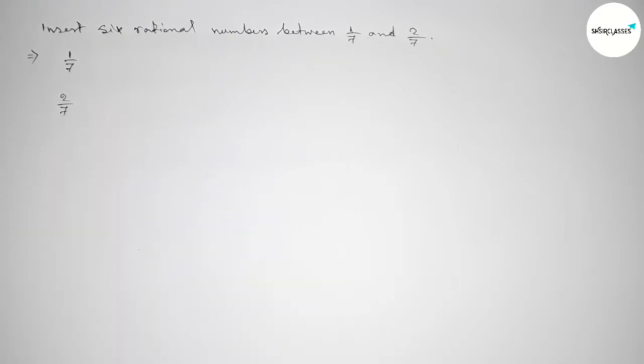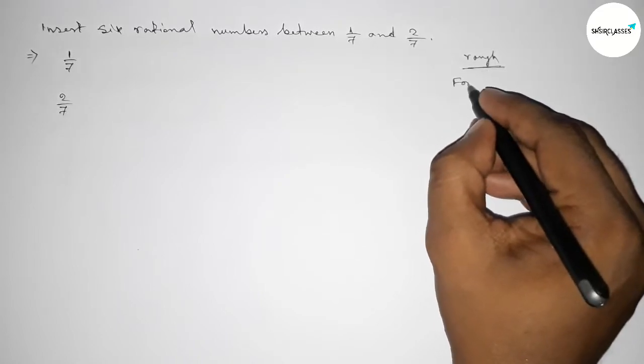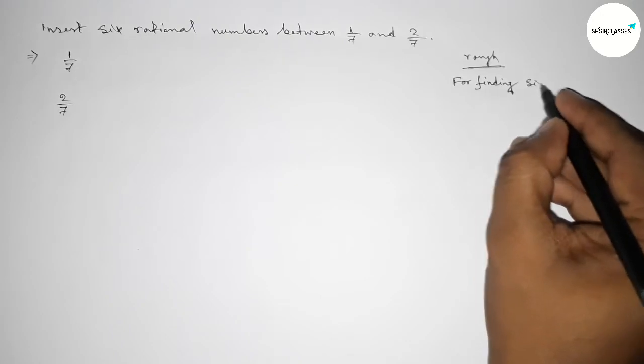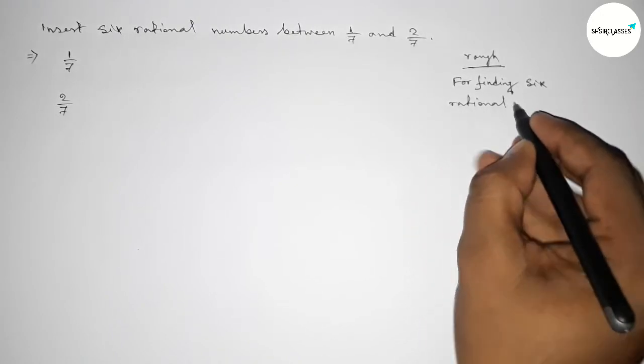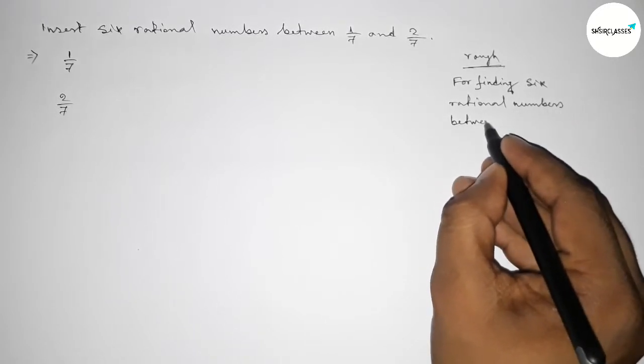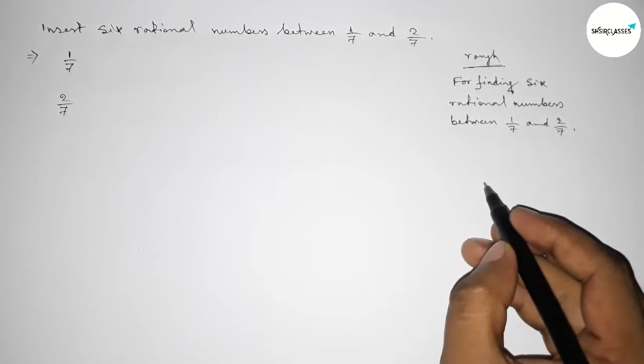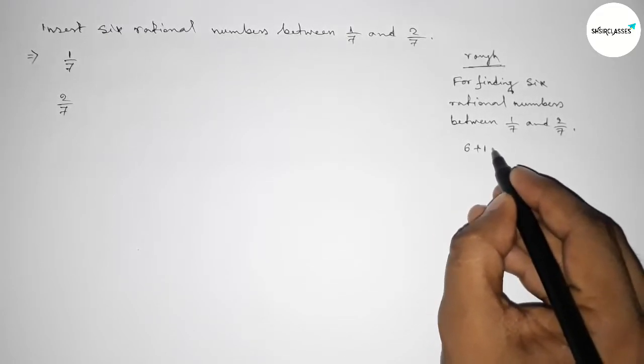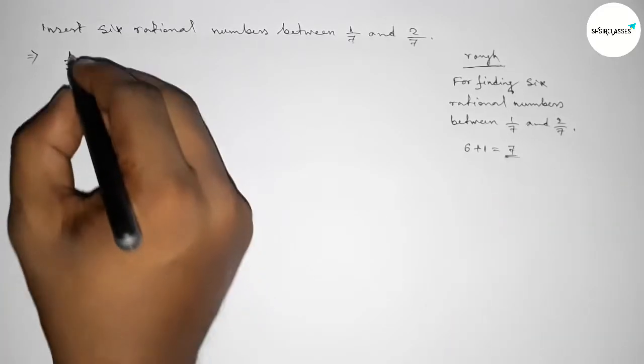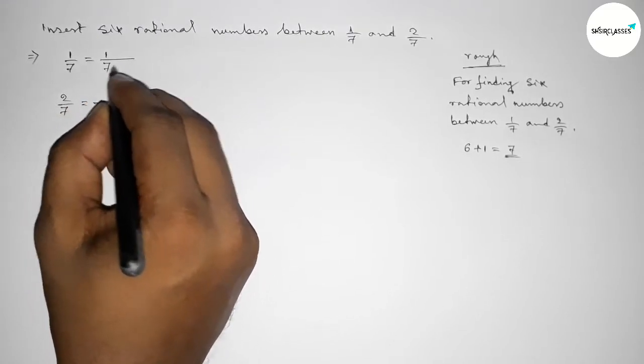Now roughly discussing here some calculation. For finding six rational numbers between 1/7 and 2/7, we have to follow this method. We should multiply both numbers by 6 plus 1 equal to 7. Now multiplying 7 with both numbers by this way, so here 1/7 and here 2/7.